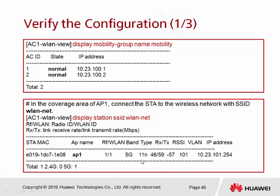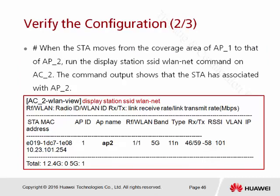From the output you can also see the current frequency band connected by this STA, the Wi-Fi version (for example 11N), receive and transmit info, the RSSI (radio signal strength), the VLAN, and the IP address. Using the same command again after performing roaming, you will notice the same MAC address and same IP address, but now the client is connected to AP number two.